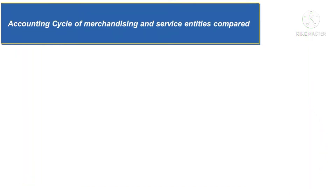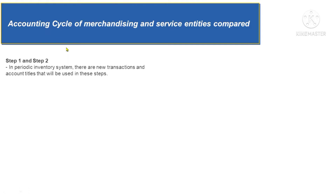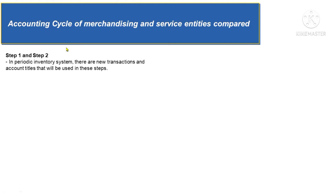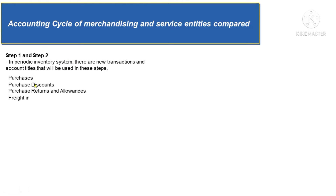Let's start comparing the accounting cycle for merchandise entities versus that of service entities. In steps 1 and 2 of the accounting cycle — identification of transactions and journalizing of accountable transactions — merchandising entities, because of their nature of operations which is the buying and selling of goods, have new account titles related to the purchase of goods: purchases, purchase discounts, purchase returns and allowances, and freight in.